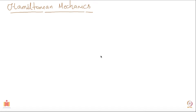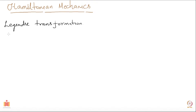Let us begin by starting with something called the Legendre transformation which you may have already encountered before. Suppose you are given a function f which is a function of a single variable x, and I define a new function denoted by capital F which is a function of two arguments x and xi. Xi is a new variable which I am introducing, and capital F is defined as x·xi minus f(x).